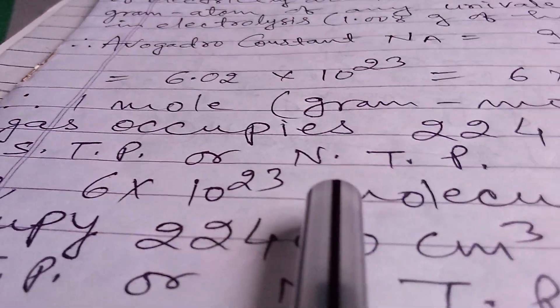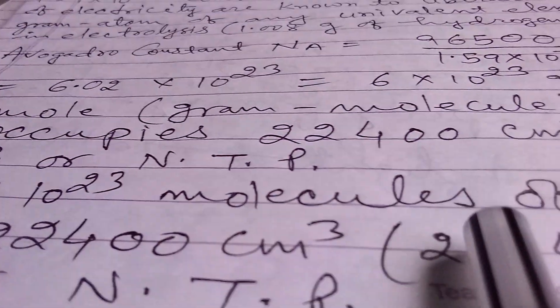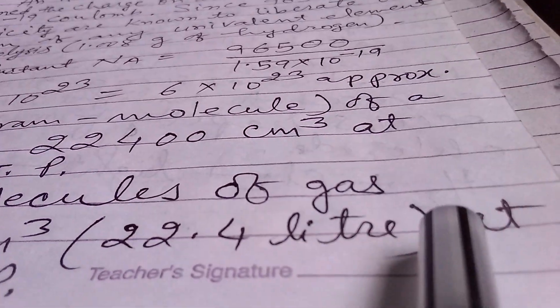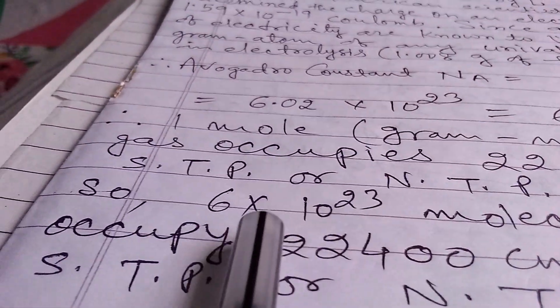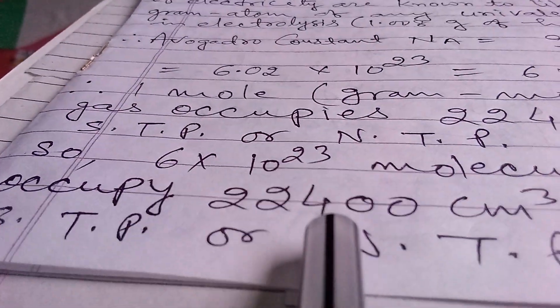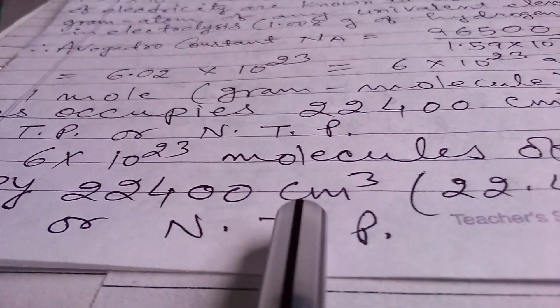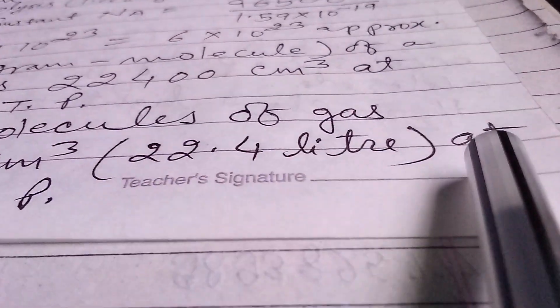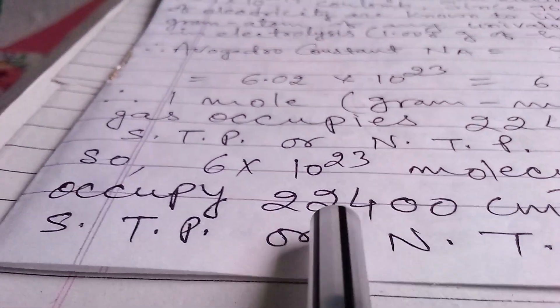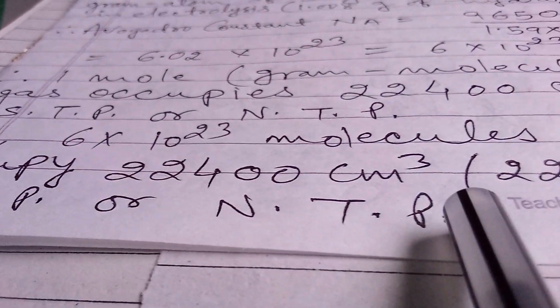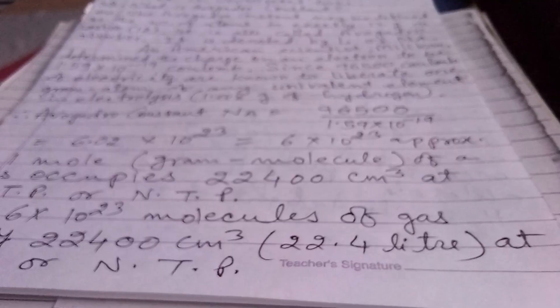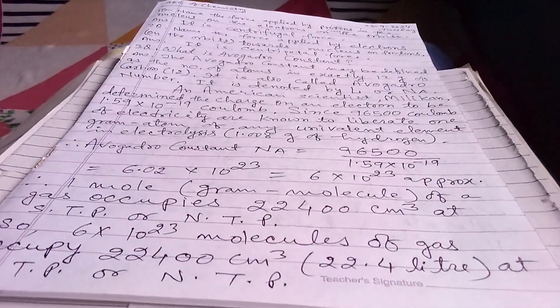So 6 × 10^23 molecules of gas occupy 22,400 cubic centimeters, that is 22.4 liters at STP or NTP. Thank you. If you like, please see and subscribe.